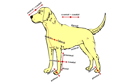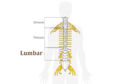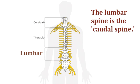The term caudal, together with rostral, makes more sense in quadrupeds and fish, where they would replace the terms anterior and posterior, which would correspond to ventral and dorsal. The lumbar spine is the caudal spine.